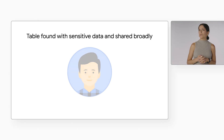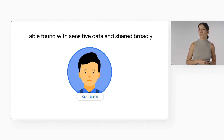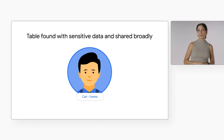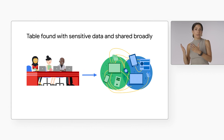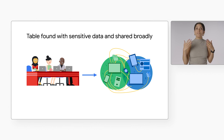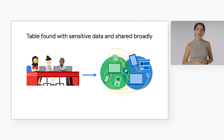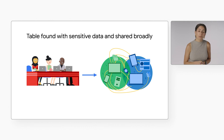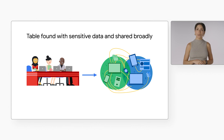Our second scenario is about a table that was found with sensitive data and shared broadly. After running a scan, Automatic DLP identifies a table that contains hundreds of emails and home addresses. The table was intended to be temporarily shared with Carl on the events team, since he's helping to send out some swag to customers. Instead of being shared directly with Carl, this table was made public and shared across every department in the entire company, and even partner teams — and potentially the whole internet. Not only does Carl and everyone on the events team have access to this sensitive information, but it could be publicly exposed outside of the company, highly increasing the risk of exposure and possible misuse.